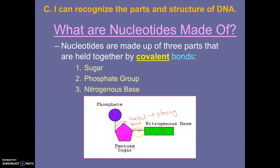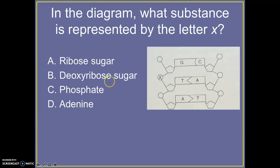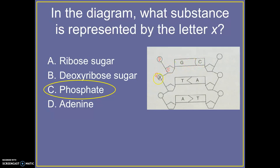There's a good question from the diagram: what substance is represented by the letter X? The answer is C — it is the phosphate. So you have a phosphate, you have a sugar, you have another phosphate — these are the backbones. And then in the middle you have the steps of the ladder, which are the nitrogenous bases. But that X is a phosphate.